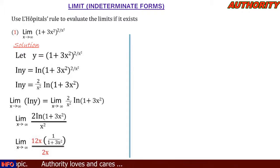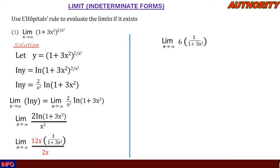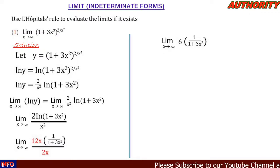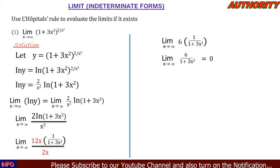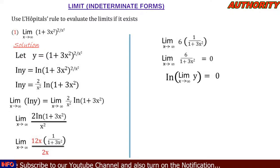Here we have 12x over 2x. So 12x divided by 2x gives us 6. So we are having the limit as x approaches infinity of 6 · (1 / (1 + 3x²)). When we plug in infinity, we get 6 / (1 + 3x²) which equals 0. So the right-hand side equals 0.